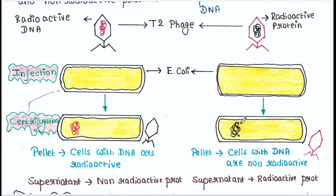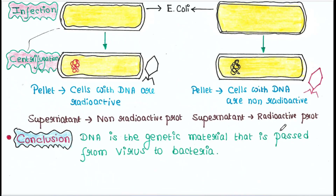In the second set, the pellet contained bacterial cells with non-radioactive DNA, and the supernatant contained radioactive proteins. Bacteria infected with viruses that had radioactive proteins were not radioactive, indicating that proteins did not enter the bacteria from the viruses. DNA is therefore the genetic material passed from virus to bacteria. That's all for today's lecture — I hope you liked it. Thank you for watching.